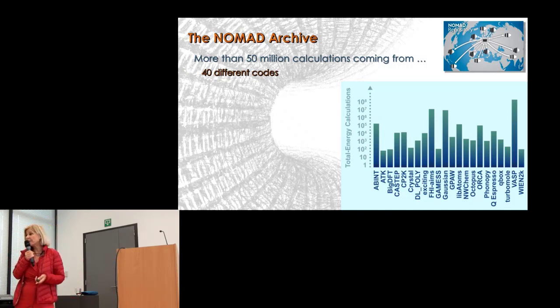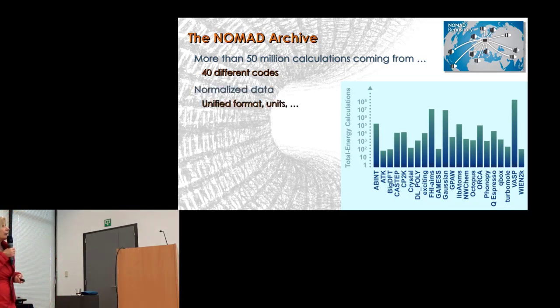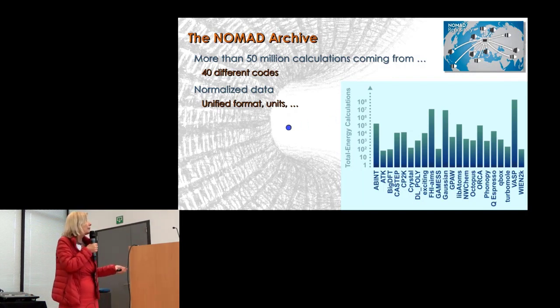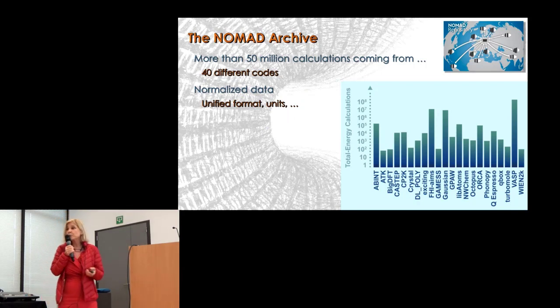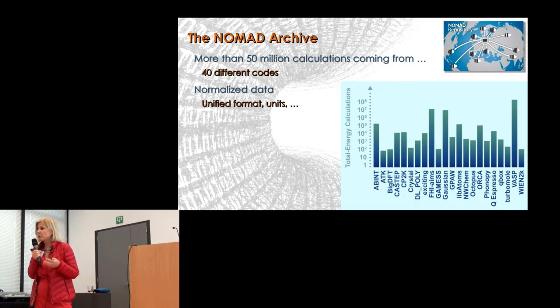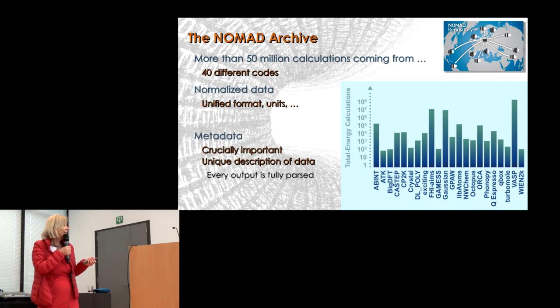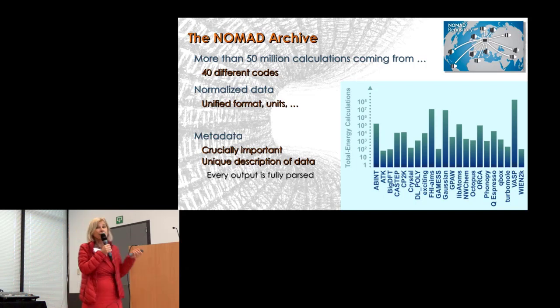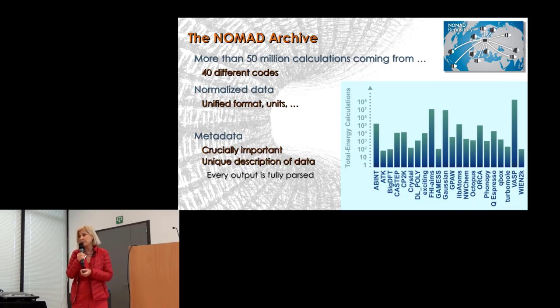The raw data is nice to have, but we want to go further. What we have in the NOMAD archive is the same data brought into a normalized format, having the same file format and the same units. For doing this normalizing, we didn't want to put the burden on code developers because they should do science with the code. This is what we developed: a set of metadata and parsers that did this job. Very important: the metadata is not only generic metadata like total energies or lattice constants, but also all the metadata specific to the code. Otherwise we wouldn't understand the meaning of a VASP total energy. We have 40 parsers in place which do the job.